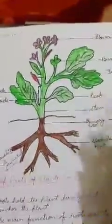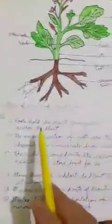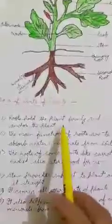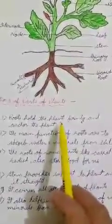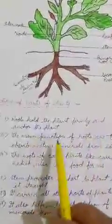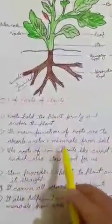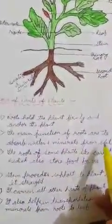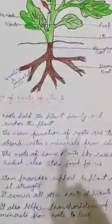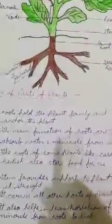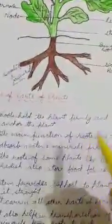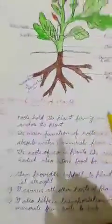This is all about the function of the different parts of the plant. Let's have a recap. First, root: root holds the plant firmly and anchors the plant. The main function of roots is to absorb water and minerals from the soil. The main functions of roots are absorption — absorption of water and minerals — and fixation of the plant in the soil.